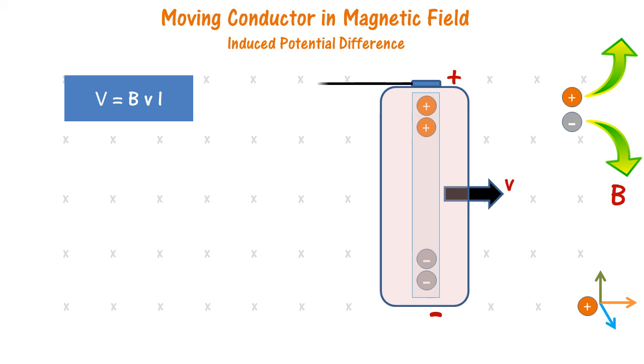If we complete the circuit by creating a loop across the positive end and the negative end, current will start to flow in this loop. This current will continue to flow till such time the conductor keeps moving in the magnetic field.